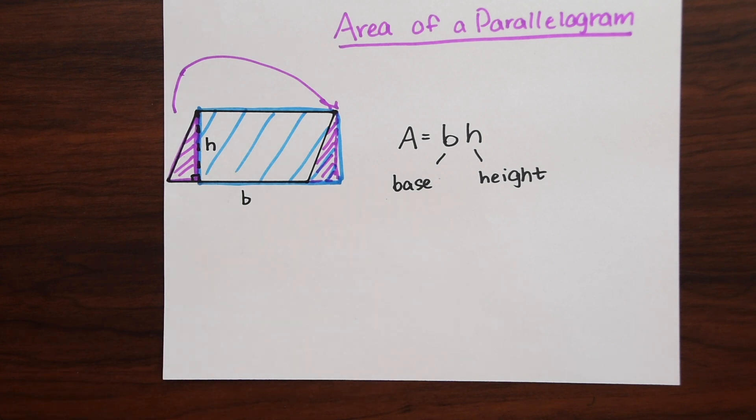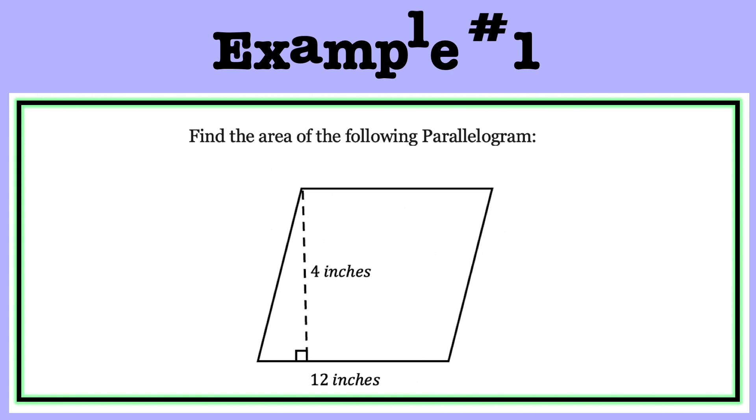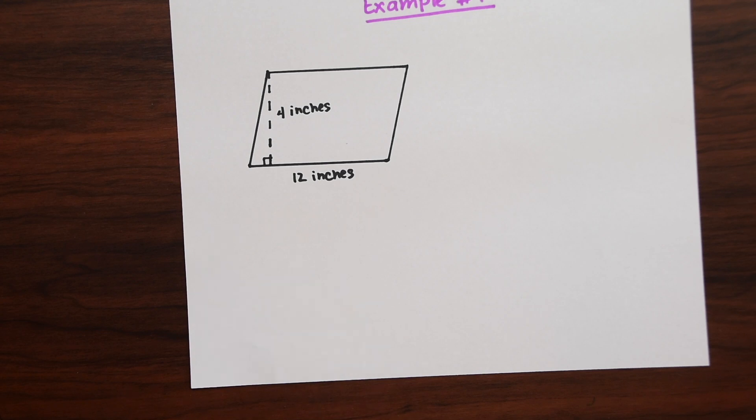So now that we know a bit of the background of parallelograms and the area let's look at our first example. So we need to find the area of the parallelogram where we have a height of 4 and a base of 12. So dealing with inches.